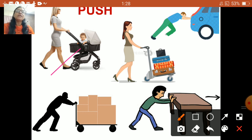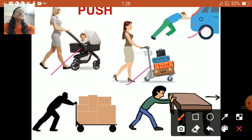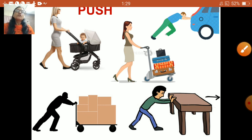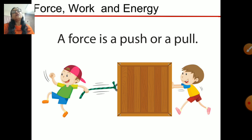Here you can see people pushing things. A woman is pushing a pram with a baby, a woman is pushing her luggage on a trolley, a man is pushing a car, and another man is pushing his loads on a trolley. In pulling and in pushing, they are applying some force. So a force is a push or a pull.